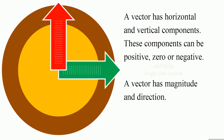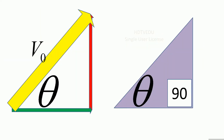A vector has horizontal and vertical components. These components can be positive, zero, or negative. A vector has magnitude and direction. So we have our axes: positive x and positive y. Here is our vector V0, which is 17 meters per second. The angle is 60 degrees with respect to the horizontal. So how do we resolve our vector into x and y components?